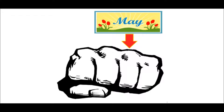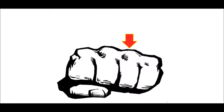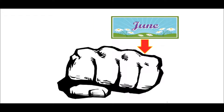The next time we move over to a knuckle, we have May, which of course is 31 days because it's on a knuckle. Now we move down to the valley, which is 30 days or less, and that's June — so that's 30 days.